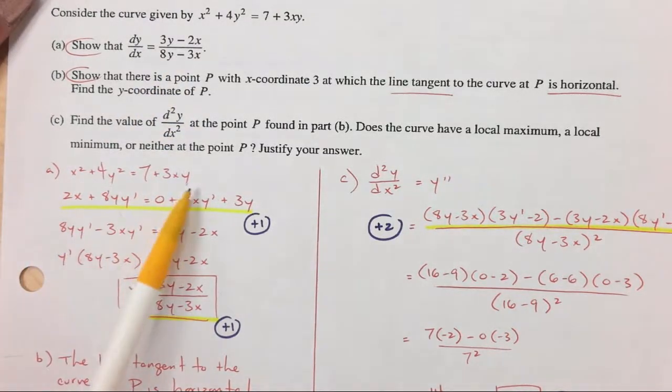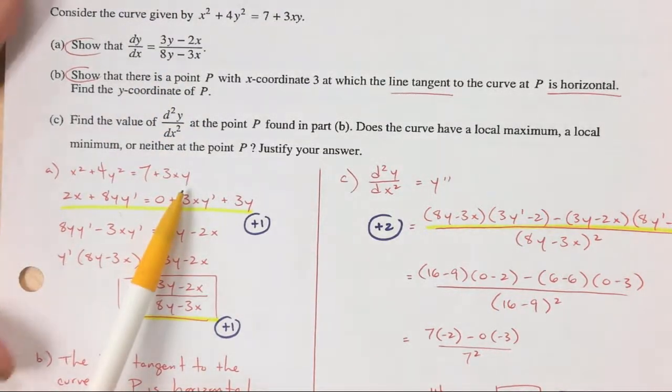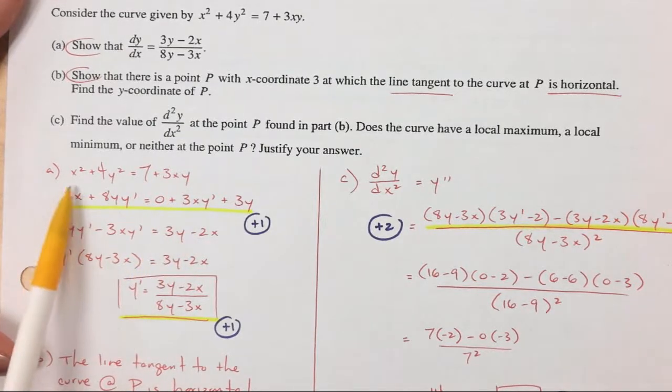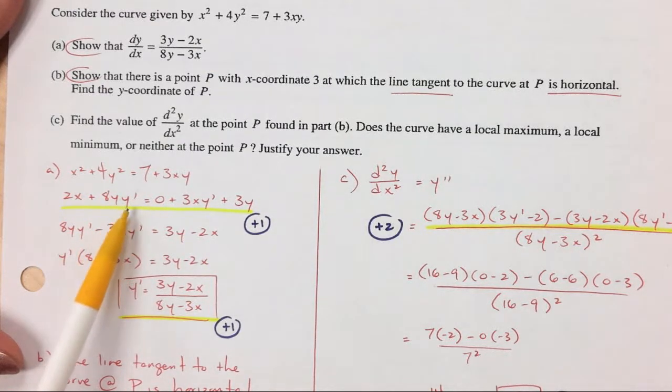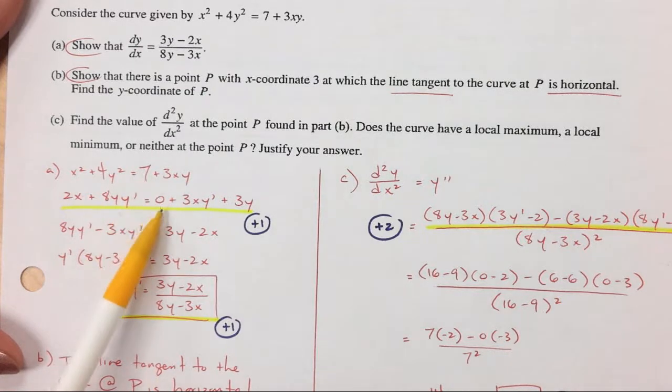So for part A, I start off with the function itself, the equation that they give you. And then for each part, I get the derivative. So 2x squared, 8y, y prime. You can write y prime or dy/dx, it does not matter. The derivative of a constant is zero.